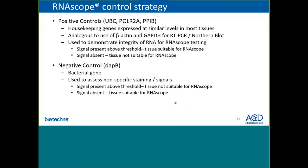The negative control typically employed and recommended for customers is a bacterial gene known as DAPB. This is a gene that has no homology to any sequences in the human genome or to sequences in many other species that RNAscope probes have been developed for, whether it be mouse, rat, or dog. The purpose of the negative control is to assess nonspecific staining and nonspecific signals in the tissue of interest. In general, if the DAPB probe shows any signal above a background threshold, the tissue would not be suitable for RNAscope analysis; whereas if the signal is absent, the tissue is suitable.